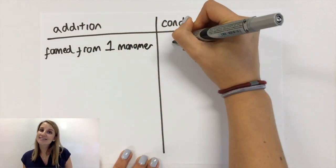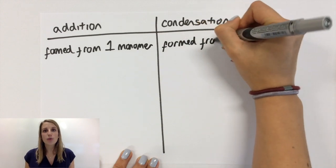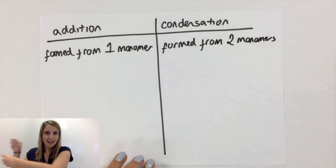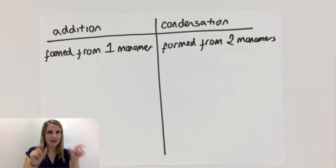In condensation polymerization, by contrast, you have two monomers, so they are alternating in your polymer kind of in like an ABAB type fashion.